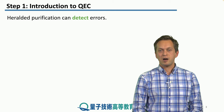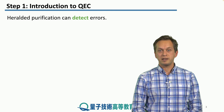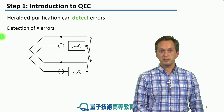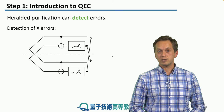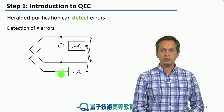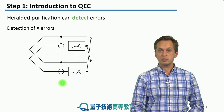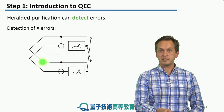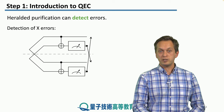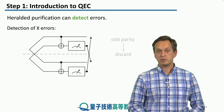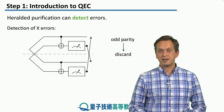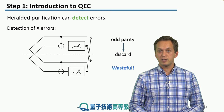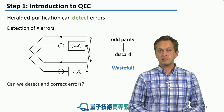In the previous lesson we talked about how we can manage errors using heralded purification as a means of detecting errors. We distributed a bell pair between two nodes of a quantum network which we wanted to test if it had been affected by noise — in this case a Pauli X error. We distributed a second bell pair between the same nodes and used it to check whether an error had occurred, measuring the second bell pair after applying CNOT gates between the first and second pairs. If the parity of the measurements was odd — one zero and one one — we discarded both bell pairs. This is wasteful: we could detect an error but had no means of correcting it. That's the job of error correction.